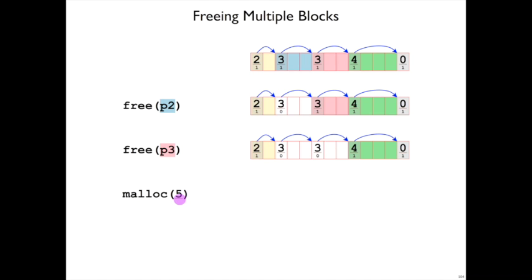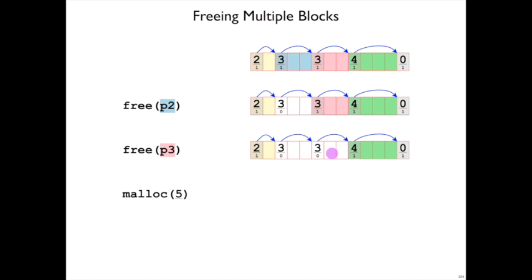Now suppose we want to malloc something of size 5 words, so we'll need a 6-word block, and we don't have a 6-word block. But we could have a 6-word block. There are 6 words right here that are not currently allocated. The allocator is allowed to use those.